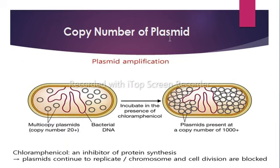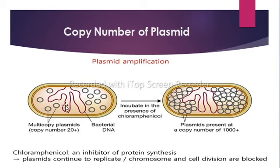Next, we have copy number of plasmid. Plasmid number varies from 1 to 50 copies per cell. Amplification of plasmid, i.e. copy number of plasmid, can be increased when the bacteria are in their exponential phase. The antibiotic chloramphenicol stops chromosomal DNA from replication. When chloramphenicol is added and incubated for 12 hours, the plasmid will replicate and up to 1000 copies of plasmid can be achieved.